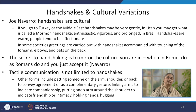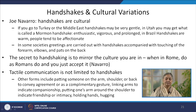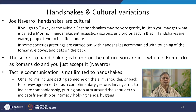Different other forms of haptics incorporate patting somebody on the arm, shoulder, or back to convey agreement, or as a complementary or conciliatory gesture. Linking arms to indicate companionship, putting one's arm over the shoulder of others, holding hands, hugging, etc. — we would discuss the interpretations of these signals in our next module.